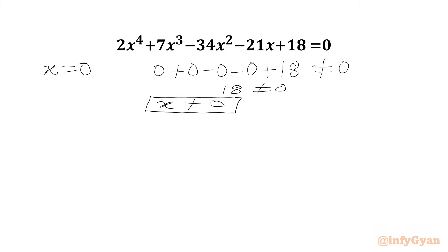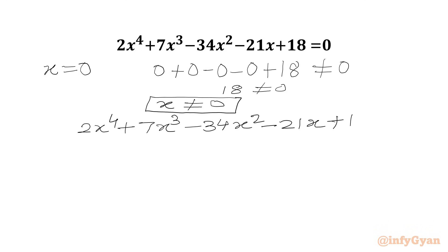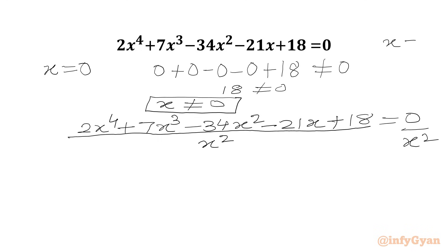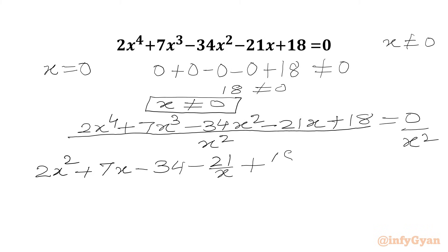Now we can divide our equation by x² on both sides. So: 2x⁴ + 7x³ - 34x² - 21x + 18 = 0, divided by x². This gives us 2x² + 7x - 34 - 21/x + 18/x² = 0.